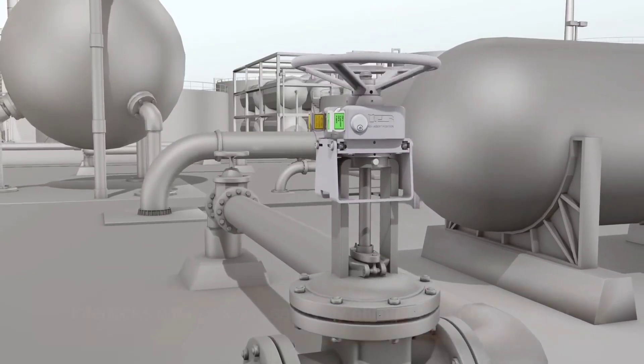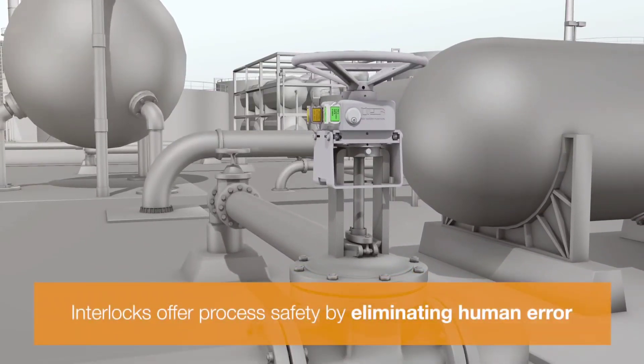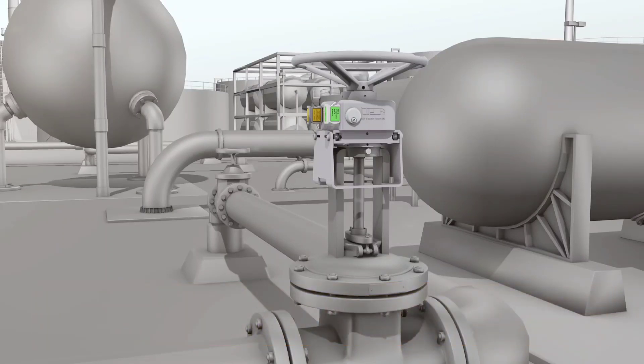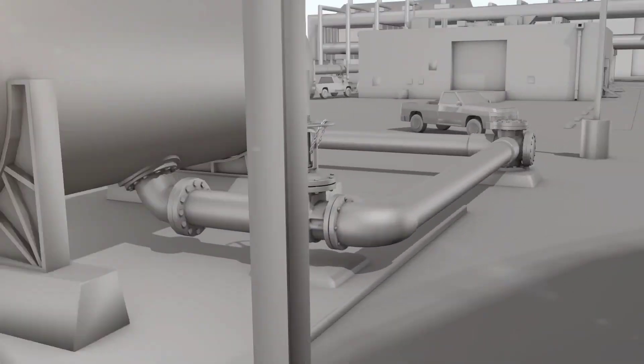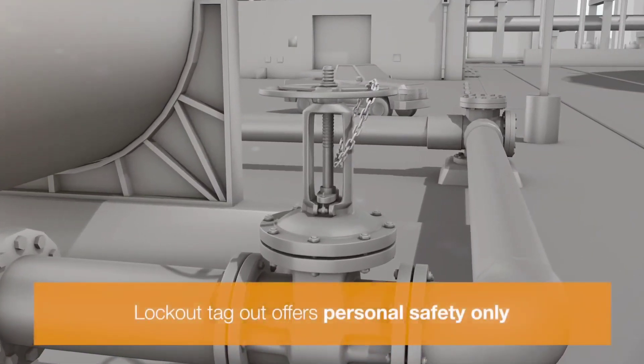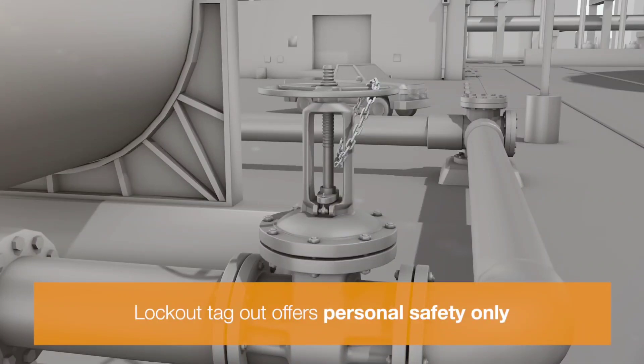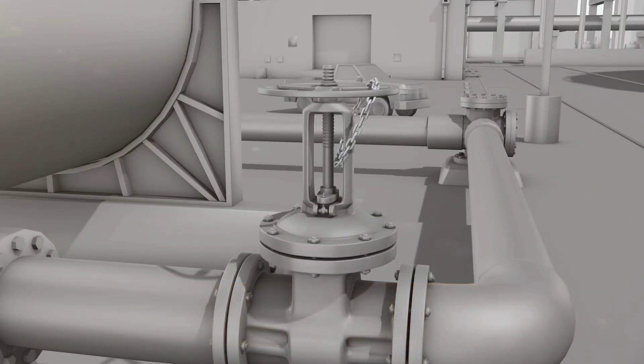Valve interlocks are permanently installed on a valve. They improve process safety by preventing incorrect valve operation. Lockout tagout products temporarily lock out valves. They only offer personal safety and should not be used for process safety purposes.